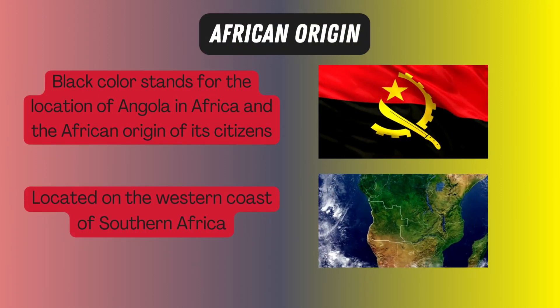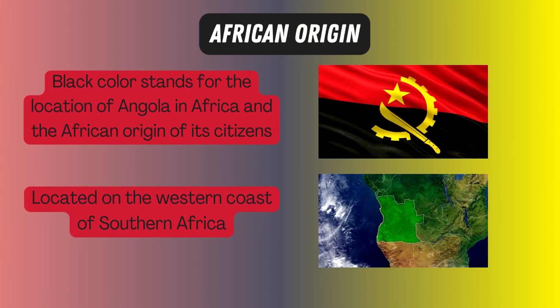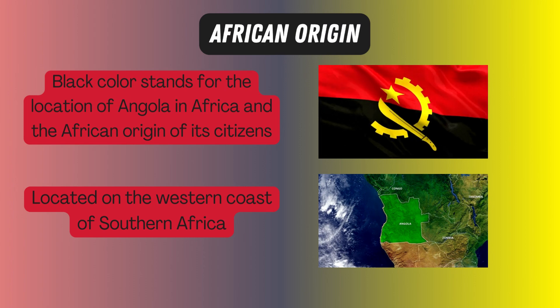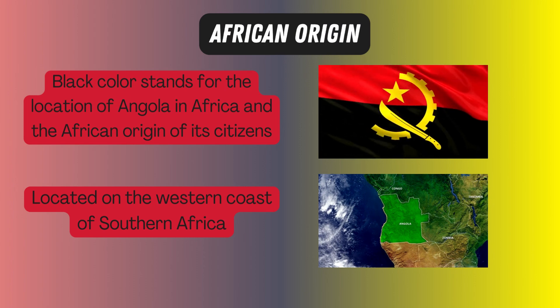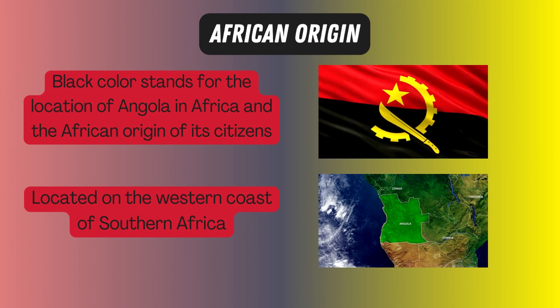Angola is located on the western coast of southern Africa. The black color represents the location of Angola in Africa and the African origin of Angolans.